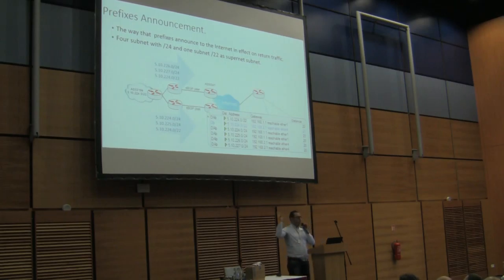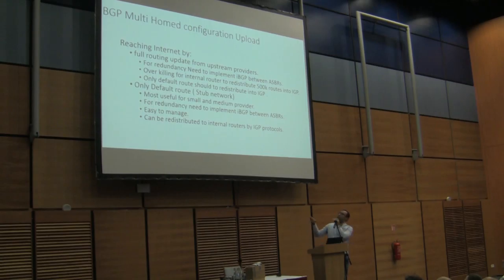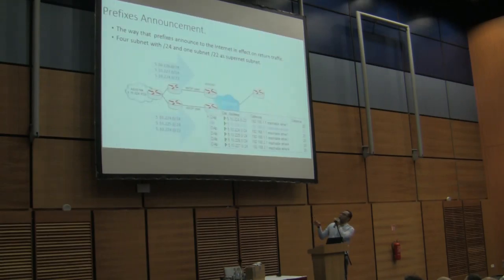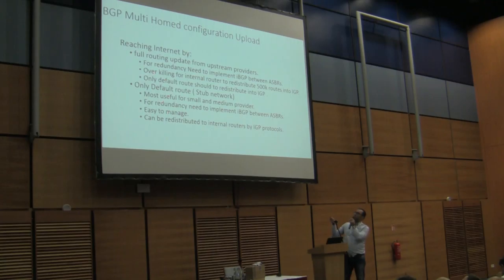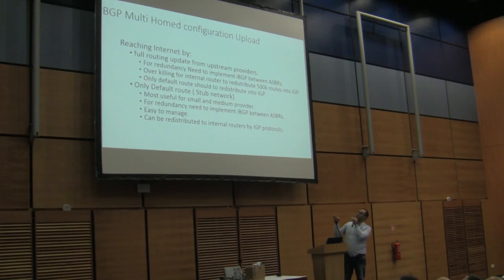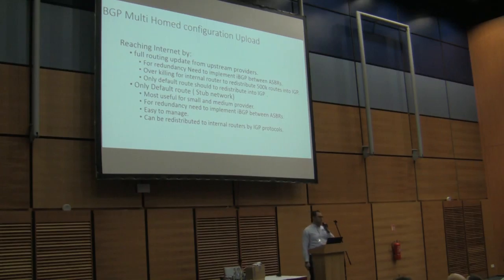For how to reach the internet, there are two ways. We can ask our provider to provide full routing tables, but full routing tables require iBGP to be implemented between two BGP speakers for redundancy — which means injecting around 5,000 routes inside your internal routing table. Instead, we propose to only inject the default route inside the routing table, so the inside network forwards everything to our ASBRs, which handle how to forward traffic. For simplification, you can ask your provider to send only the default route — this is most common for small providers and is easy to implement with less configuration overhead.